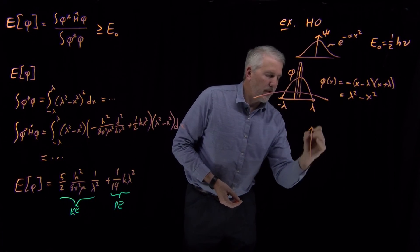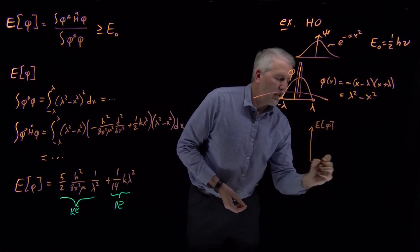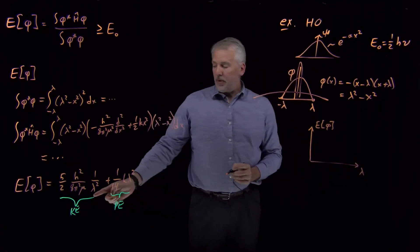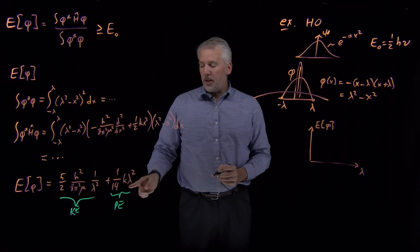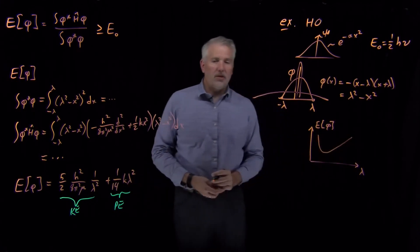So if I think about what that means about the trial variational energy as a function of the lambda value that I choose, if I graph this function, one over lambda squared plus lambda squared times some constants, it's going to have this general type of shape.